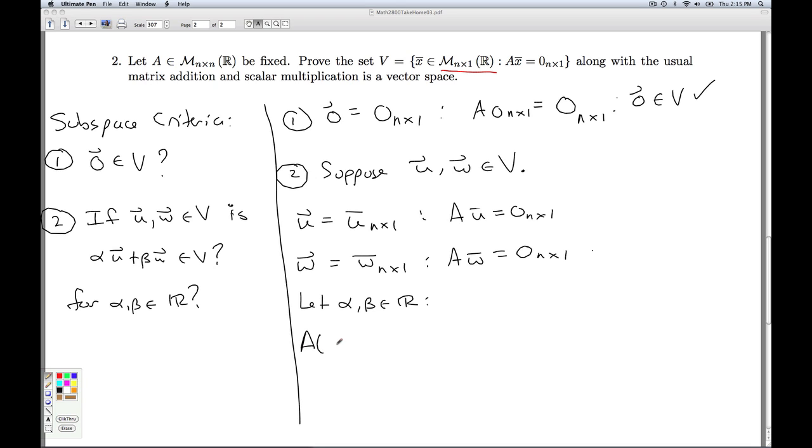Then if I take A times (alpha u + beta w), using properties of matrix multiplication, I can distribute that. And using properties of scalar multiplication, I can bring those scalars out like so. So A times u, that's the 0 matrix. Same thing with A times w. Alpha times the 0 matrix is the 0 matrix. Beta times the 0 matrix is the 0 matrix. So I add them together, I get the 0 matrix. Hence, alpha u plus beta w is in fact in V.